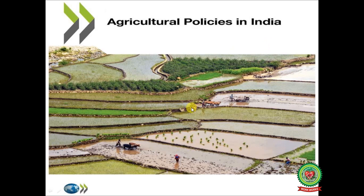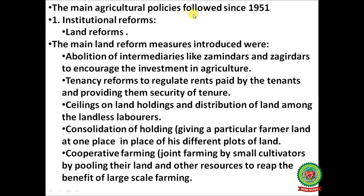Agriculture policies in India: the main agriculture policies followed since 1951. First is institutional reforms — land reforms. Main land reform measures introduced were: abolition of intermediaries like zamindars and jagirdars to encourage investment in agriculture, because with the abolition of zamindars, farmers have surplus with them and are motivated to invest in agriculture.